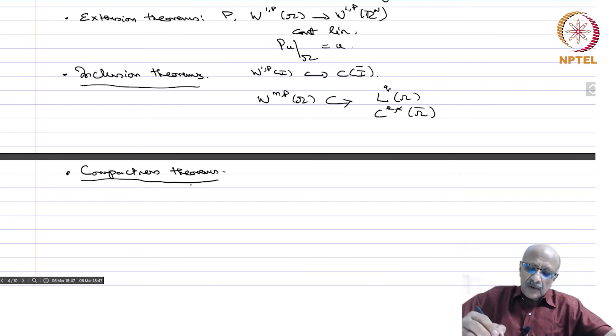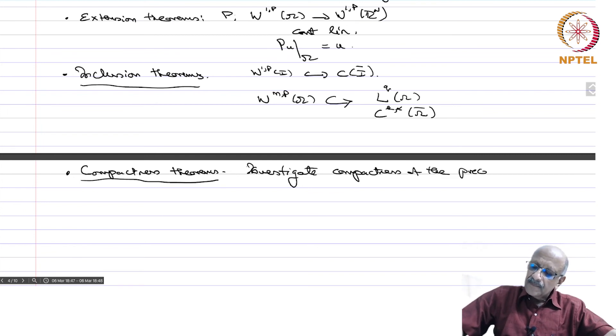Then compactness theorems. We saw that this inclusion W^{1,p}(I) in C(I̅) was compact. So we investigate compactness of the preceding inclusion operators. Compactness is very important because once you have compactness, then you have sequences with convergent subsequences, and therefore, especially in the study of PDEs, nonlinear PDEs, and eigenvalue problems, this will be a very useful idea to have.